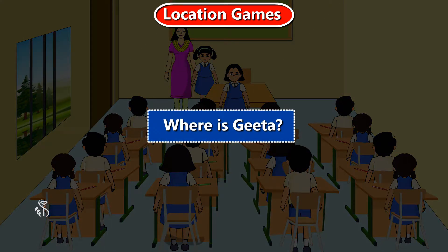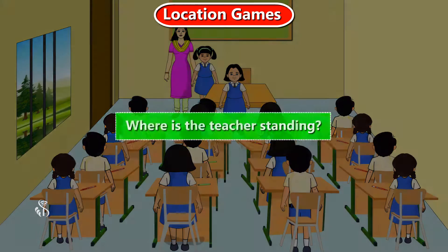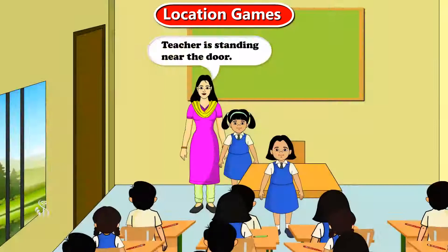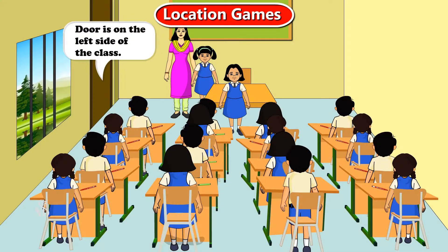Where is Gita? Gita is in the second line, second bench. Where is the teacher standing? Teacher is standing near the door. Where is the door? Door is on the left side of the class.